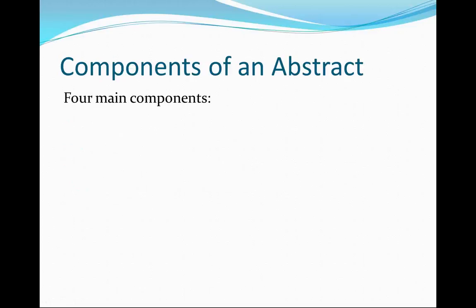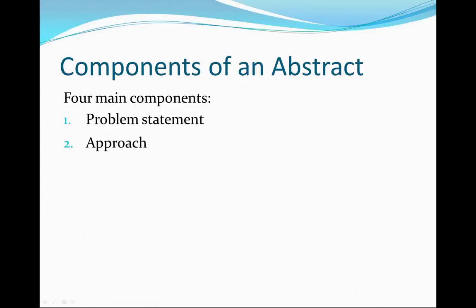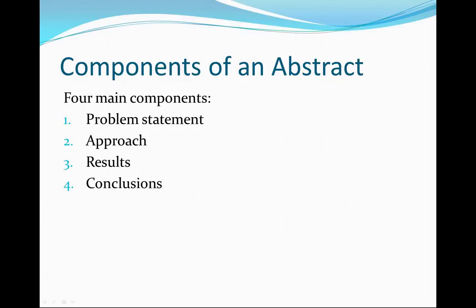There are four main components to an abstract. The first component is the problem statement, the second is the approach, the third are the results, and the fourth are the conclusions. I'm going to step through each of these and then give you some examples.